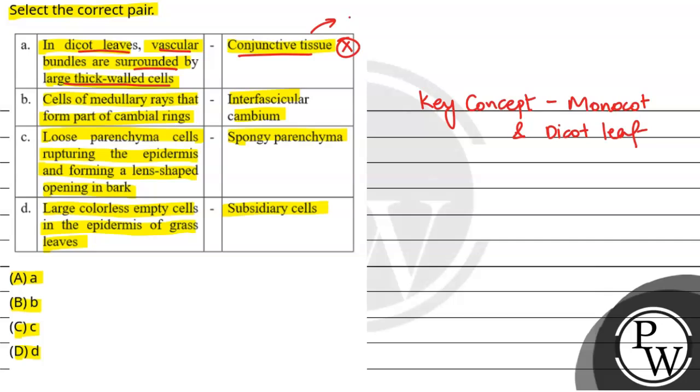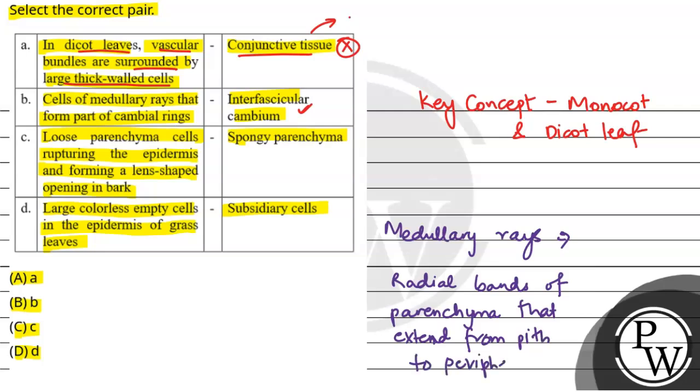Second is the cells of the medullary rays that form a part of the cambium rings is called the interfascicular cambium. This is absolutely right. Medullary rays are basically the radial bands of parenchyma cells. They are the radial bands of parenchyma that extend from the pith to the periphery. So this is right, and this is a part of the stem not leaves. Interfascicular cambium is present in stem, which makes secondary tissues.